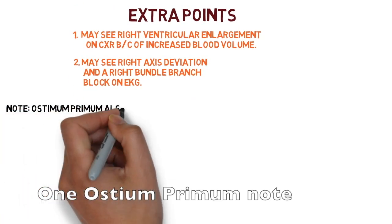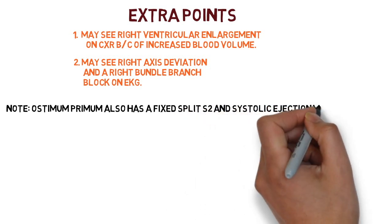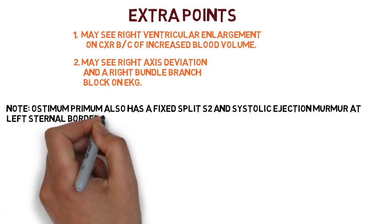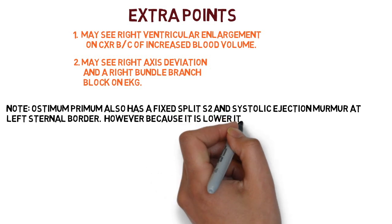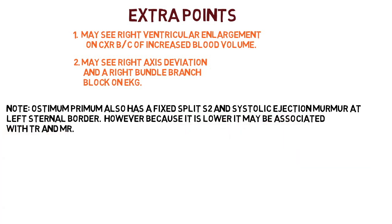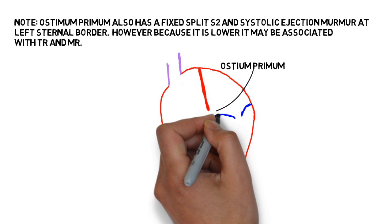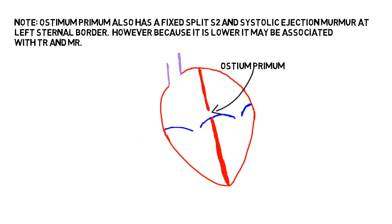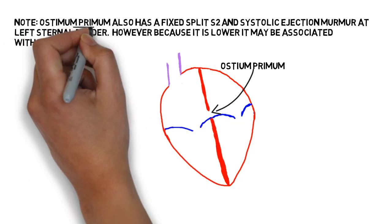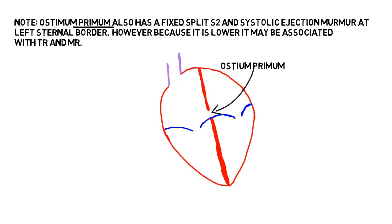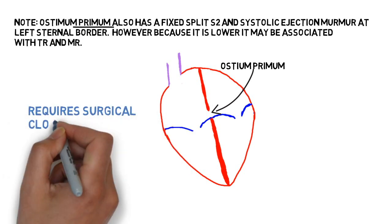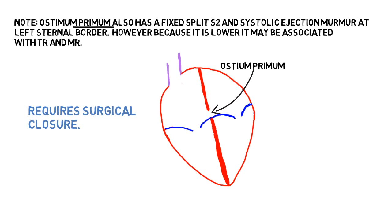Regarding ostium primum: it also has a fixed split S2 and a systolic ejection murmur at the left sternal border. However, because it is lower, it may be associated with tricuspid regurgitation and mitral regurgitation. The ostium primum is notably lower than a secundum ASD. Importantly, it almost certainly requires surgical closure and carries a significant possibility of tricuspid and mitral valve repair as well.